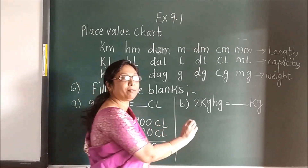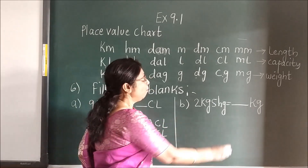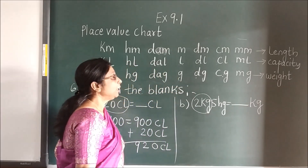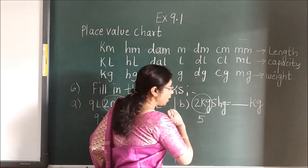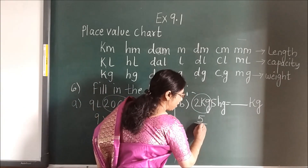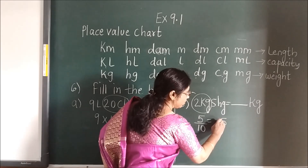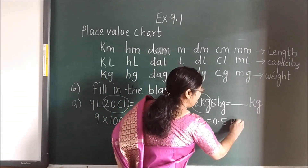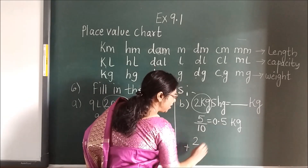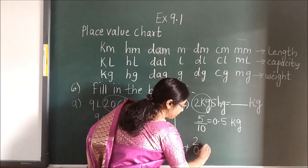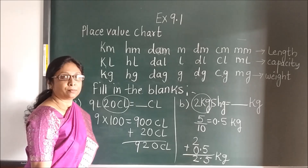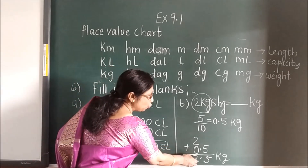Here also same thing. In this sum you will see KG and KG — this will not change. What you have to change is HG to KG. Where is it? Here — 5 children. HG to KG — HG is here, KG is here. You are moving left. Divide. Divide by 1, that is 10. And what you will get as the answer is 0.5. This is your KG. Now what you have to do, children? This 2 KG — you will write and add this. Add 0.5. So here you write 0.5 and the answer is 2.5.